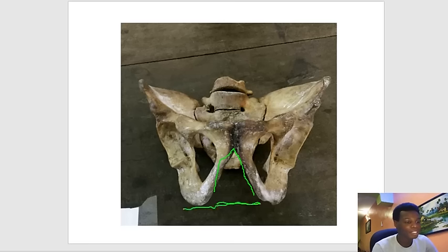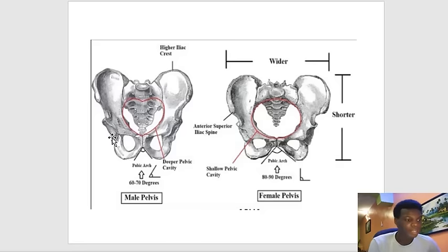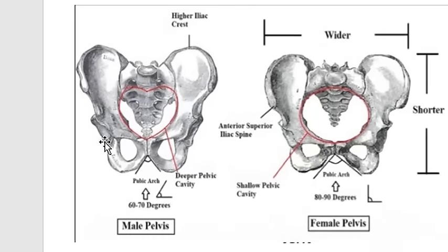In a female pelvis, the subpubic angle is wider. Here is a picture differentiating the male pelvis from the female pelvis. In the male pelvis, the pubic arc or subpubic angle is about 60 to 70 degrees, but in the female pelvis it is much larger — 80 to 90 degrees. That is the most obvious way to differentiate between the male and female pelvis.